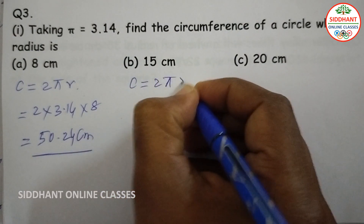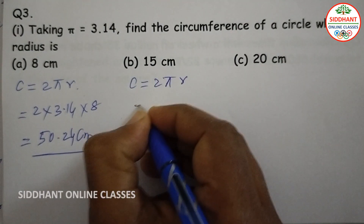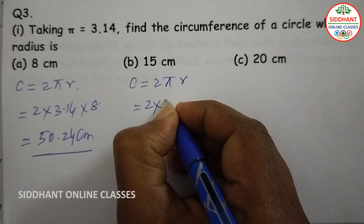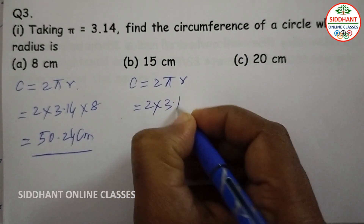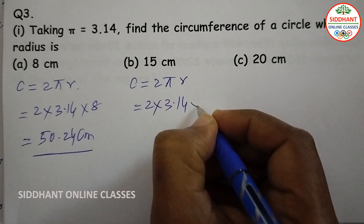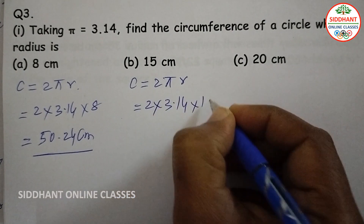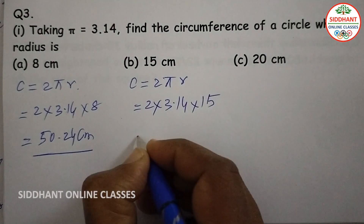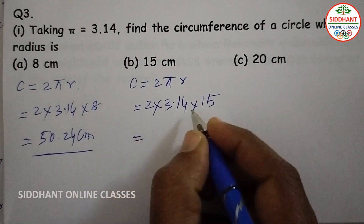Second, circumference equals 2 pi r, that means 2 into 3.14 into radius 15. When you multiply we get 94.2 centimeters.